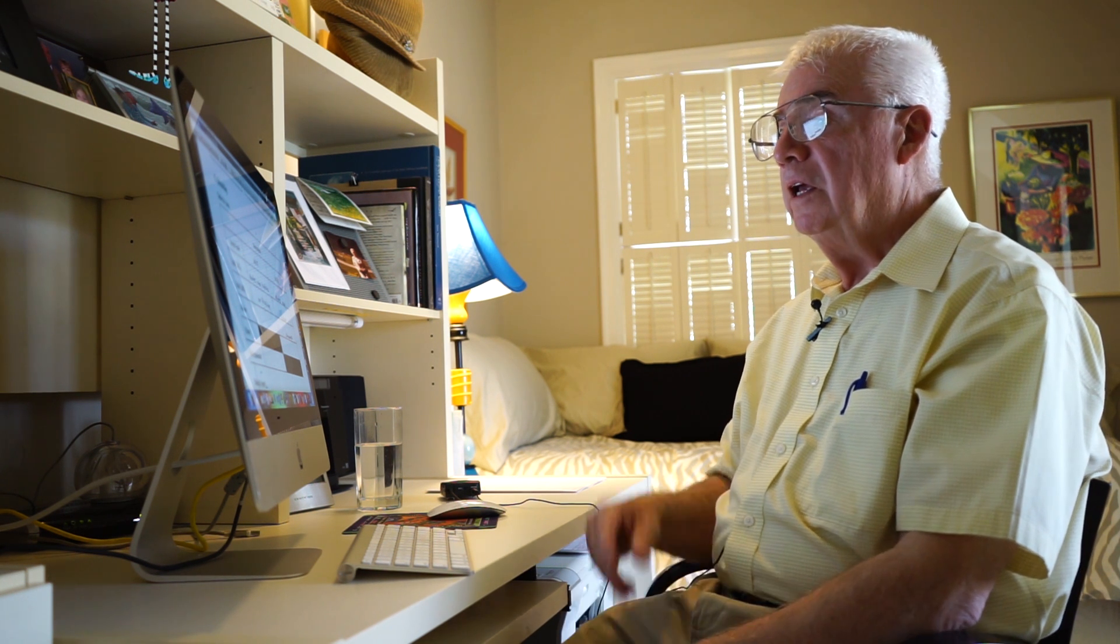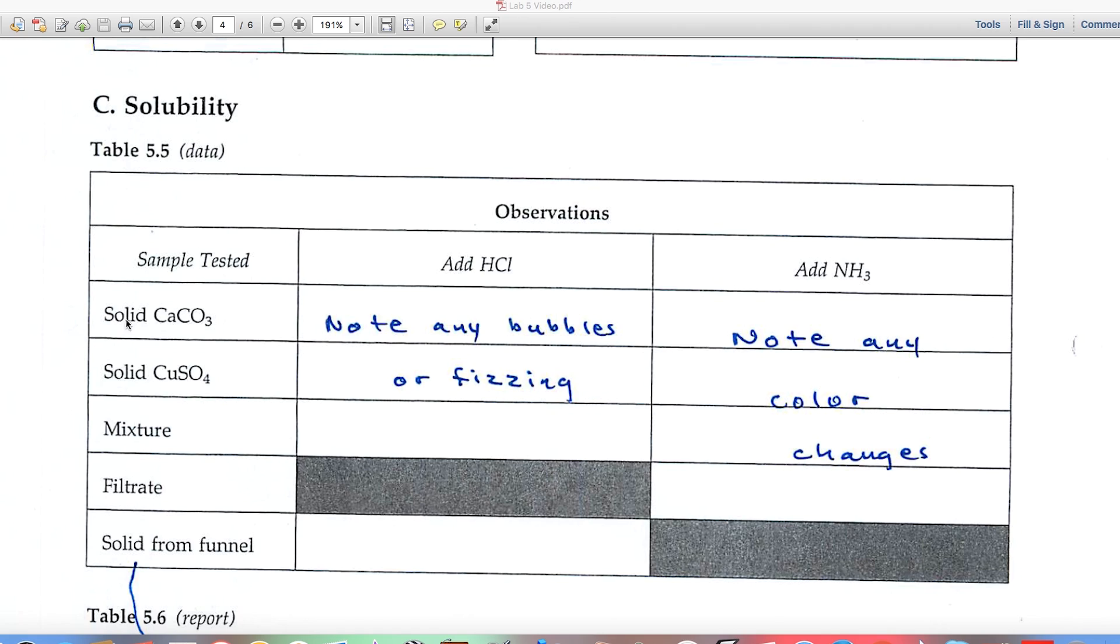Part C is on solubility. We're testing, in this case, calcium carbonate and a new substance, copper sulfate. And one of these two is soluble in water, one of these two is not soluble in water. And we'll separate them based upon their solubility. We're going to collect the insoluble solid in a funnel, and the filtrate is that water soluble substance that passes through the funnel.